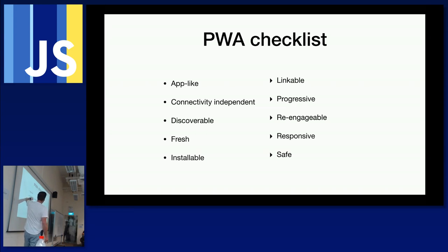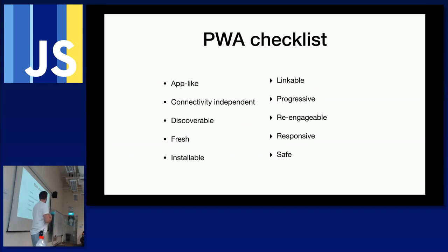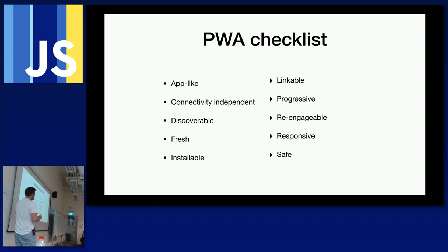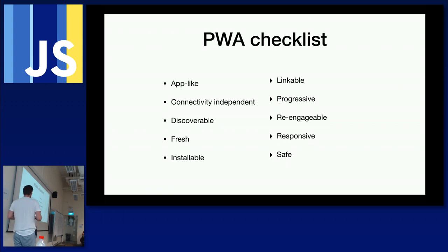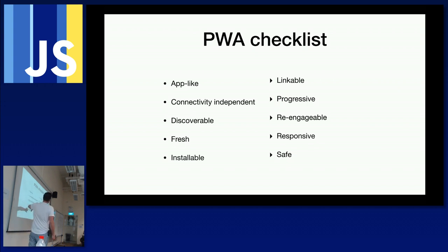Google came up with a checklist — the more of these you check, the more likely your application can be considered a PWA. The criteria include: app-like (acts and feels like a native mobile app), connectivity independent (works offline), discoverable, fresh (automatically pulls latest content), installable onto a mobile device, linkable, progressive enhancement, re-engageable via a launcher icon, and responsive.